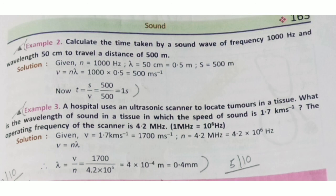Example 2: Calculate the time taken by a sound wave of frequency 1000 Hz and wavelength 50 cm to travel a distance of 500 m. N = 1000 Hz, lambda = 50 cm = 0.5 m, distance S = 500 m. Velocity V = nλ = 1000 × 0.5 = 500 m/s. Time = displacement/velocity = 500/500 = 1 second.